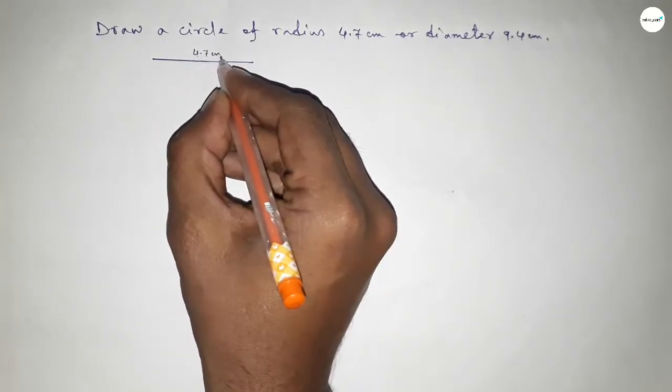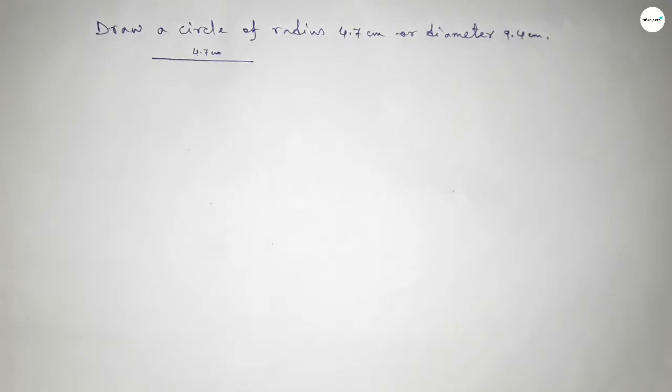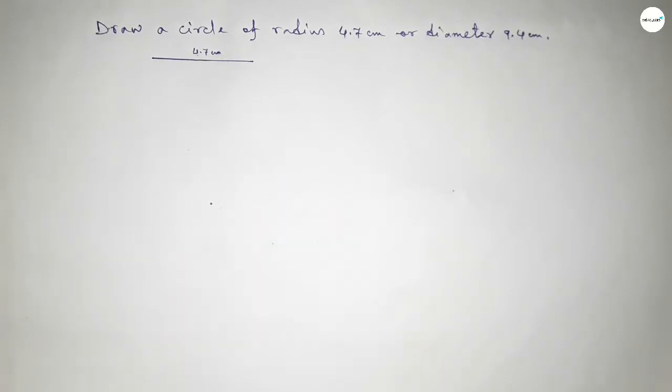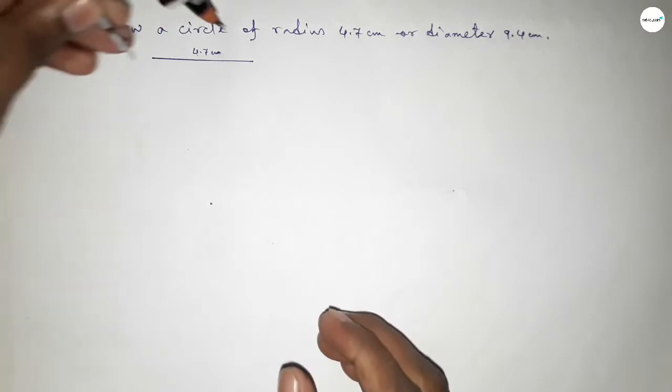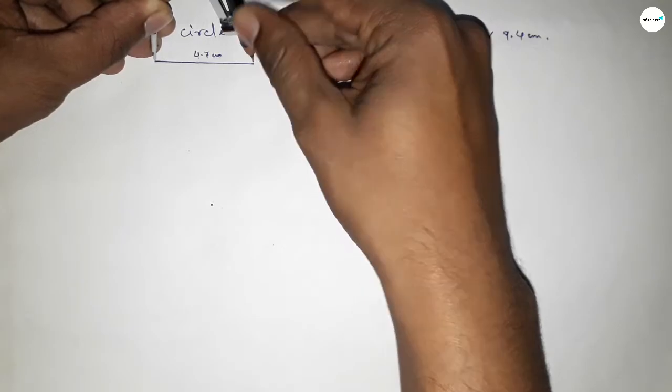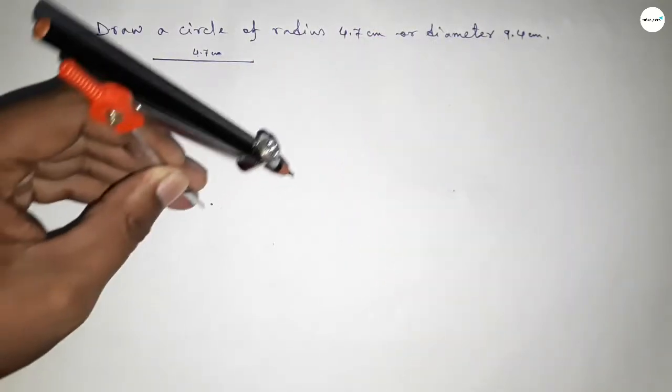Next, taking here a point, then taking the length 4.7 by using compass by this way.